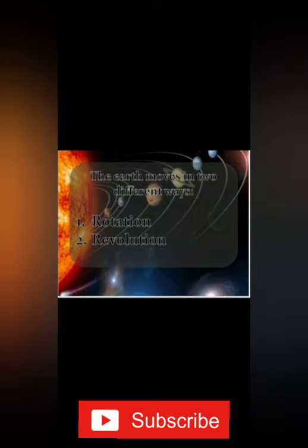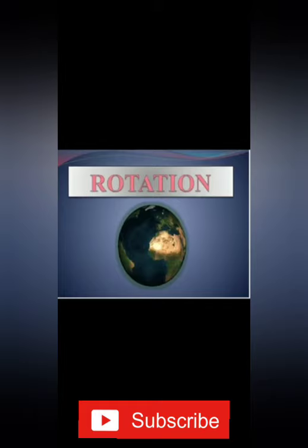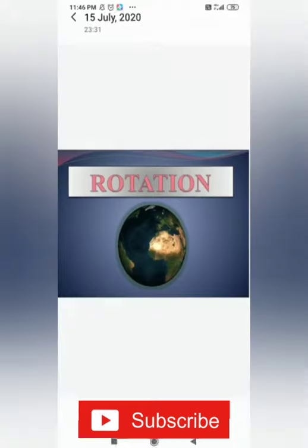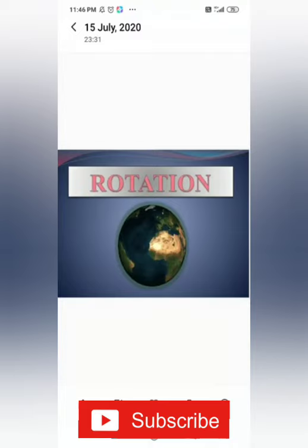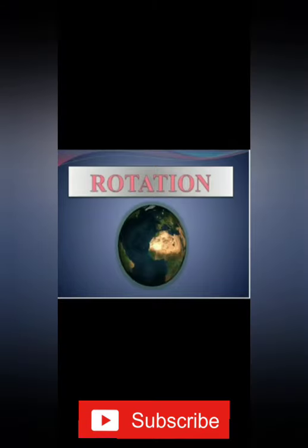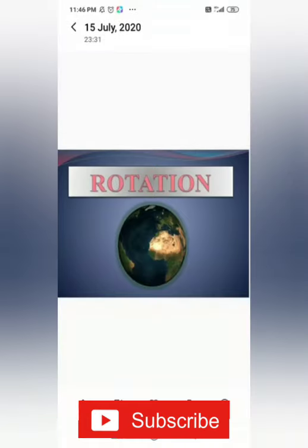The earth moves in two different ways. One is rotation and the next is revolution. Rotation is the spinning movement of the earth on its axis. The earth rotates from west to east, that is anticlockwise, and takes 23 hours, 56 minutes, and 4.09 seconds to complete one rotation. The time taken by the earth to complete one rotation is called a day. The rotation of the earth causes day and night.